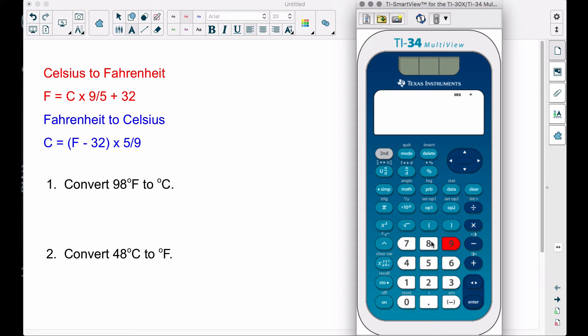So 98 minus 32, that's 66. We want to work inside those parentheses there. Then let's multiply that by 5/9. You can use a fraction there, or you can just say times 5 divided by 9. That's going to work just fine. Our answer is roughly 36.6 repeating, or 36.7 degrees.